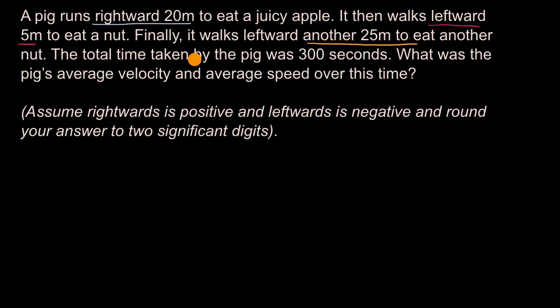The total time taken by the pig was 300 seconds. What was the pig's average velocity and average speed over this time? Assume rightwards is positive and leftwards is negative and round your answer to two significant digits.